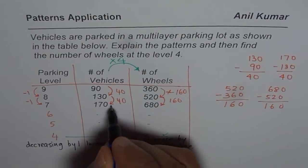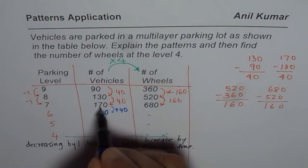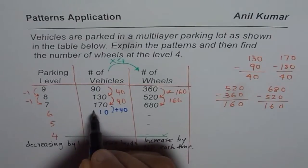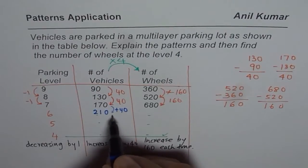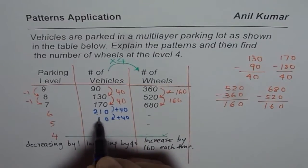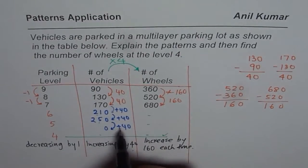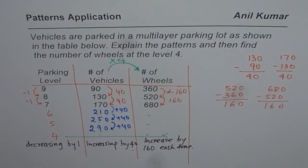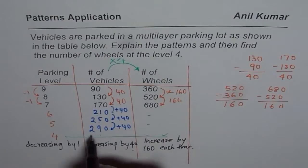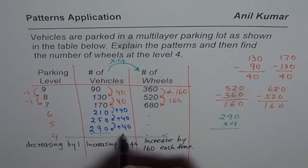So if I add 40, what do I get? 0, 4 plus 7 is 11, so we get 210. Now again, if I add 40, I get 0, 4 plus 1 is 5, so 250. And again, if I add 40 because I have to go to 4th level: 0, 4, 9, so 290. That is one thing. Now I can multiply 290. So we have 290 times 4 to get here.